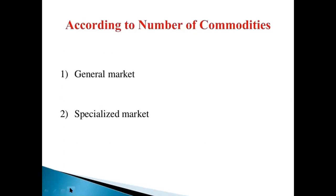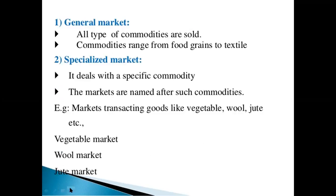According to the number of commodities, there are two types: general market and the specific or fashion market. In the general market, all types of commodities are sold. The commodity range from food grains to textiles. In the fashion market, it deals with a specific commodity.